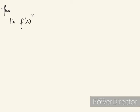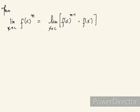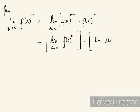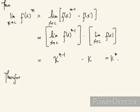If we look at the limit of f(x) raised to m as x approaches c, this is the same as the limit of f(x) raised to m minus 1 times f(x) as x approaches c. This is the limit of a product, so by the product rule for limits — which we have presented in the previous video — this equals K to the m minus 1 times K, which is K to the m. Therefore, the statement is true.